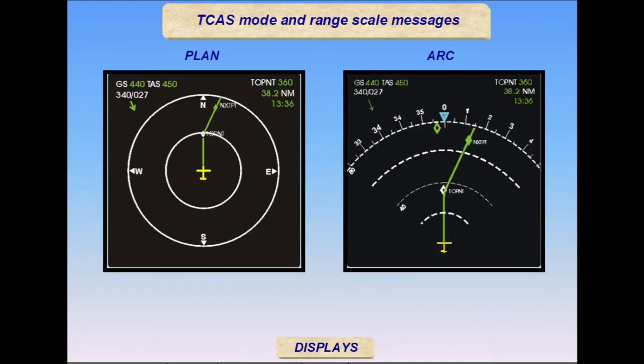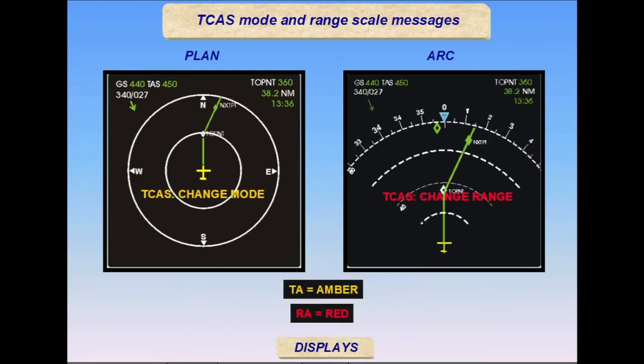When a TCAS message is present with the plan mode selected, a TCAS change mode message is displayed. It would be confusing to display relative bearing information in this north-up map presentation. If a TCAS message is present when the selected NAV or ARC range is greater than 40 miles, a TCAS change range message is displayed for older aircraft. The color of the message corresponds to the type of message, amber for TAs and red for RAs. Aural messages and visual command guidance on the PFD are not affected by the ND range and mode selections.